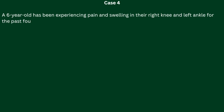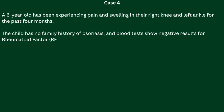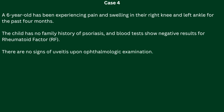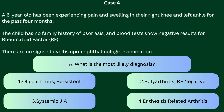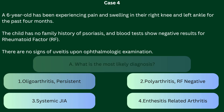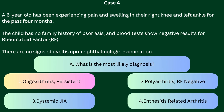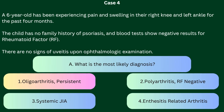Case 4. A 6-year-old child has been experiencing pain and swelling in their right knee and left ankle for the past 4 months. The child has no family history of psoriasis, and blood tests show negative results for rheumatoid factor. There are no signs of uveitis upon ophthalmological examination. Question A: What is the most likely diagnosis? The correct answer is 1 — persistent oligoarthritis. Arthritis in fewer than 5 joints during the first 6 months without progression to more joints characterizes persistent oligoarthritis. This subtype is often seen in younger children and has a better prognosis compared to polyarticular forms.